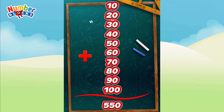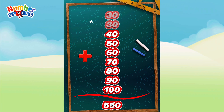Let's try another example. Let's go! 10 plus 20 is equal to 30. 30 plus 30 is equal to 60. 60 plus 40 is equal to 100.